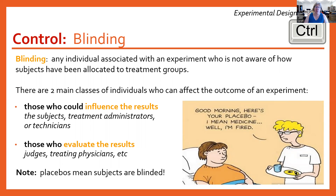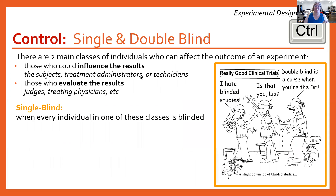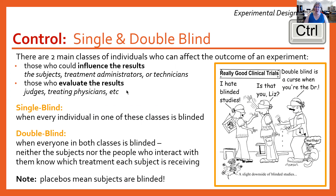Anytime you use placebos, that automatically means that your subjects are blind, so you are at least single blind. When every individual in one of those classes is blinded — either all of the participants and technicians, or the judges and evaluators — that's single blind. If you are able to get both groups to not know, then we call that double blind.